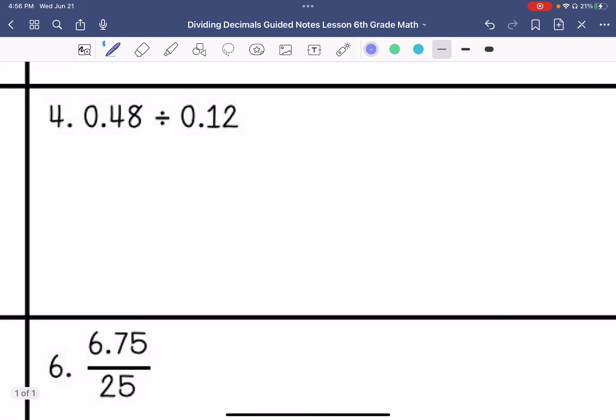Number 4. 0.48 divided by 0.12. So 0.12 is the divisor, 0.48 is the dividend. Move my decimal point twice. 12 can't go into 4. It goes into 48 four times. So my answer is 4.